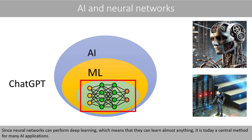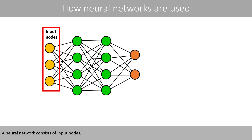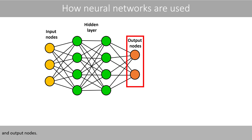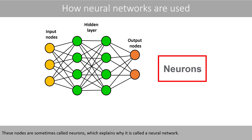Since neural networks can perform deep learning, which means that they can learn almost anything, it is today a central method for many AI applications. A neural network consists of input nodes, one or several hidden layers, and output nodes. These nodes are sometimes called neurons, which explains what is called a neural network.